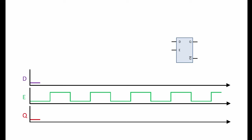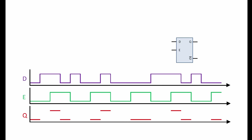We'll examine the effect of this particular sequence of changes in input D. Whenever E is high, Q is the same as D. Remember, Q follows D. Q doesn't change while E is low. So this is the sequence of outputs that we can expect at Q.